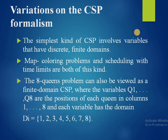The simplest kind of CSP involves variables with discrete finite domains. Map colouring and scheduling with time limits are both of this type. The 8-queens problem can also be viewed as a finite domain CSP, where variables Q1 to Q8 are the positions of each queen in columns 1 to 8, and each variable has domain Di = {1, 2, 3, 4, 5, 6, 7, 8}.